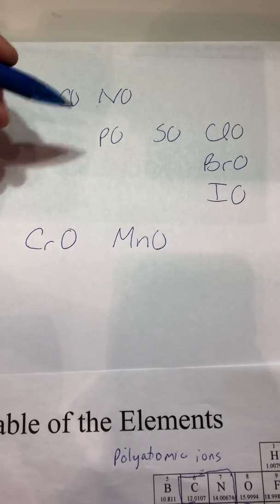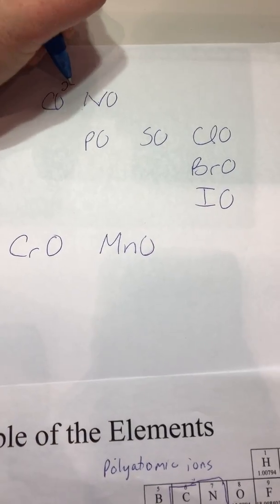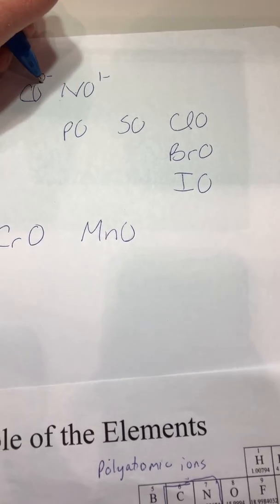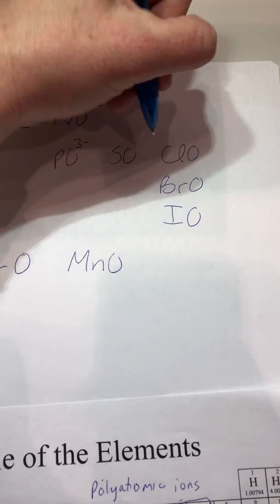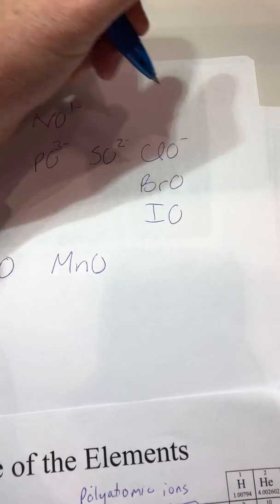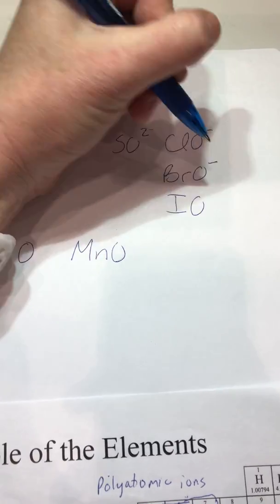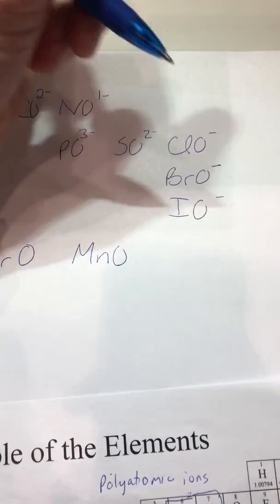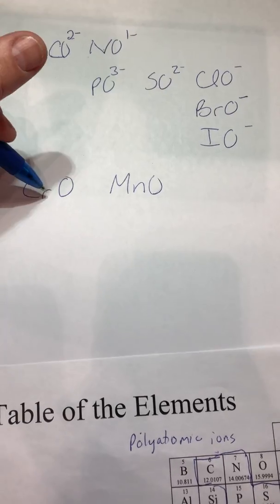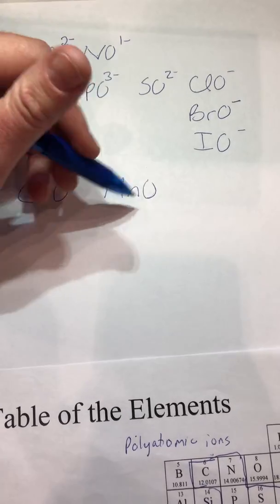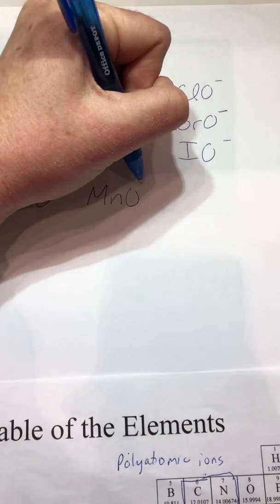And now I'm going to look at charges again. This has two things in this row so I'm going to start with a two minus here and a one minus here. This has three things so I'm going to start with a three minus, a two minus, a one minus. This bro only has one so it's one minus. This io only has one, it's a one minus. This chromium only has, this has two, the chromium and the oxygen, the manganese and the oxygen. So this is a two minus and then a one minus.